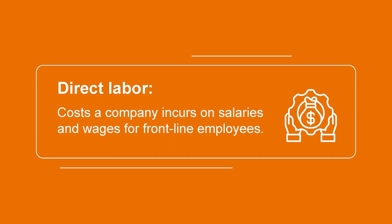But what do we mean when we say direct labor? These are the costs that the company incurs on salaries and wages for their frontline employees — the employees who are physically in the factories or warehouses that are manufacturing the product. Every hour of their time can be directly linked to the units of production.